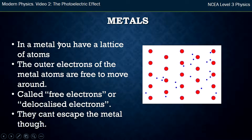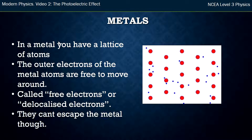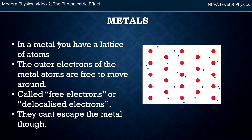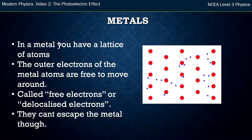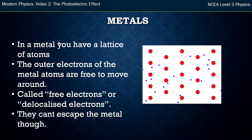So we first have to understand what's happening with metals — this will be something similar to what you've come across in chemistry before. A metal is basically made up of a lattice of atoms. A lattice is how the atoms are arranged, and within that, the outer electrons from each atom are free to move around. We call those electrons free electrons or delocalized electrons. Even though they're free to move around within the lattice — that's within the metal — the electrons can't escape out of the metal.